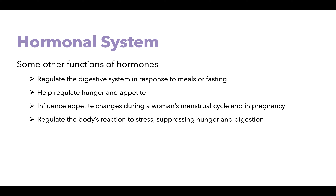Insulin and glucagon are just two small examples — there are many other hormones. Other functions include: hormones regulate the digestive system in response to meals or fasting; they help regulate hunger and appetite; they influence appetite changes during a woman's menstrual cycle and in pregnancy; and they regulate the body's reaction to stress, suppressing hunger and digestion.